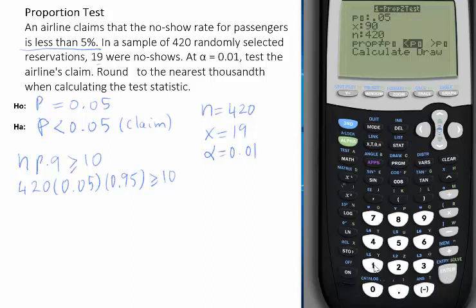X is the number of successes, which is 19. N is the sample size, which is 420. Now, what do you do here? You choose the alternative sign, the alternative hypothesis sign, which is less than. So you have to move to the second one and press Enter. And then calculate, and here you go.